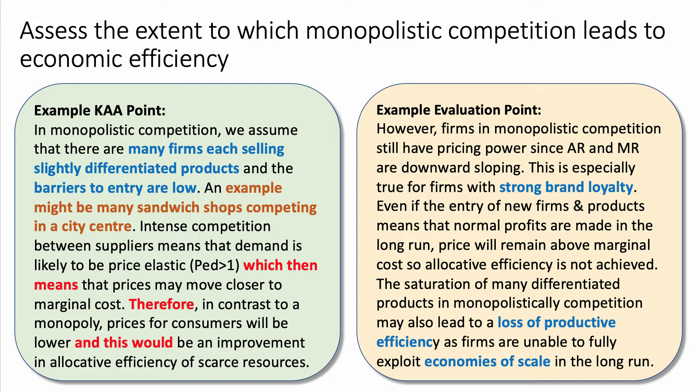However, firms in monopolistic competition still have some pricing power because the average revenue, demand curve, and marginal revenue curves are downward sloping — they're selling differentiated products. This is especially true for firms with brand loyalty and strong brand awareness. Even if the entry of new firms means that only normal profits are made in the long run, price will remain above marginal cost, so allocative efficiency is not achieved. There's the evaluation point.